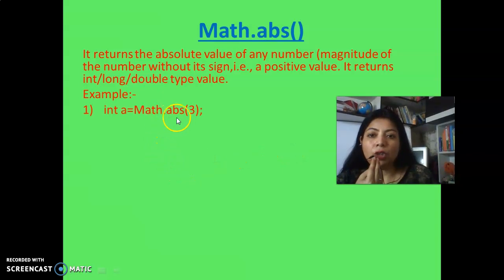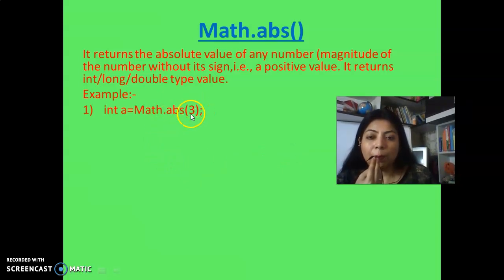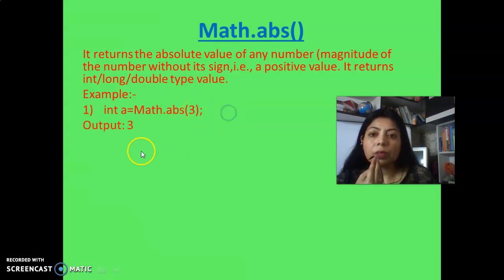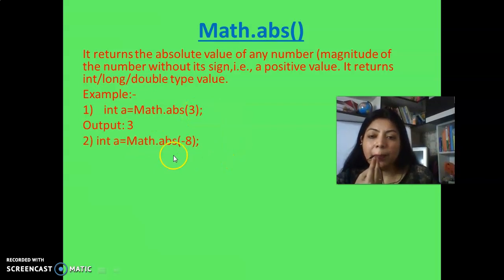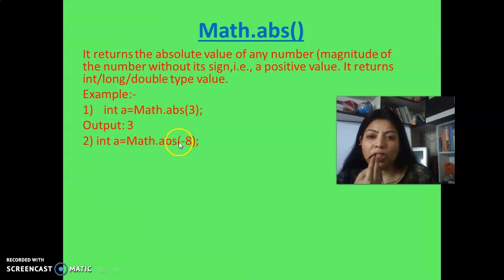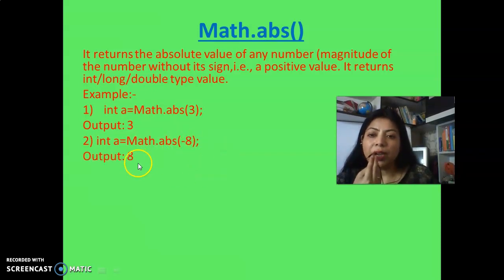For example: Math.abs(3) — since 3 is a positive number, it returns 3. Math.abs(-8) — it returns just 8, discarding the minus sign.